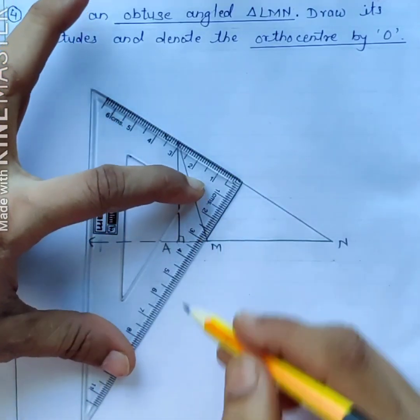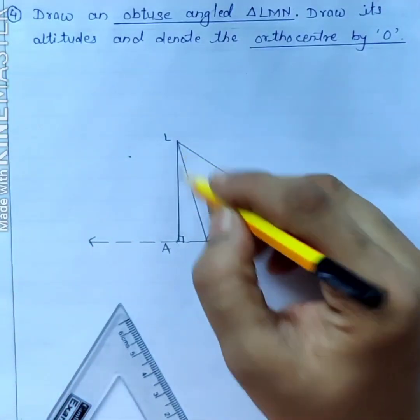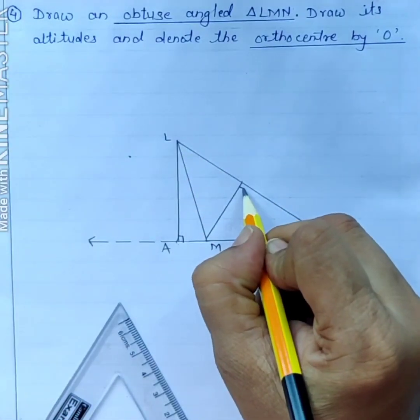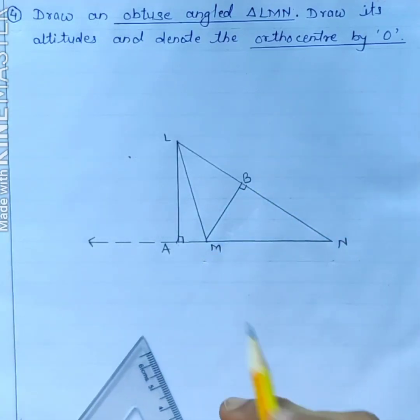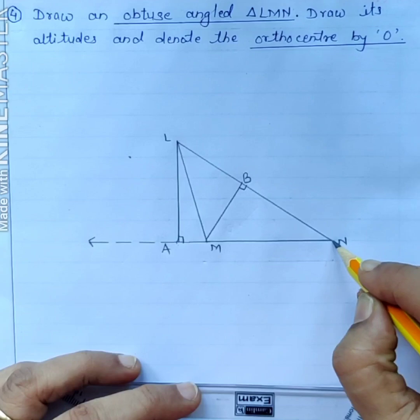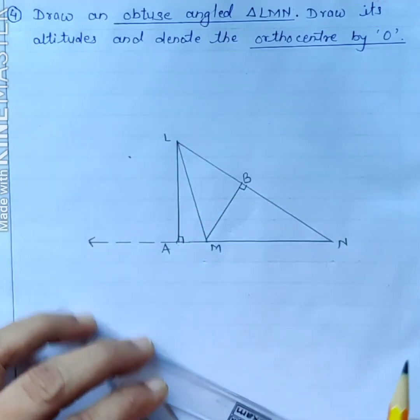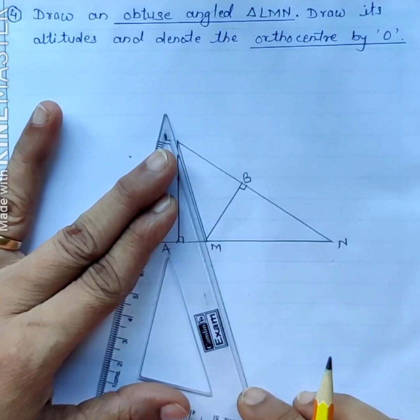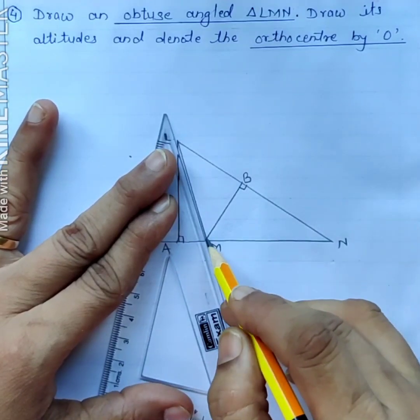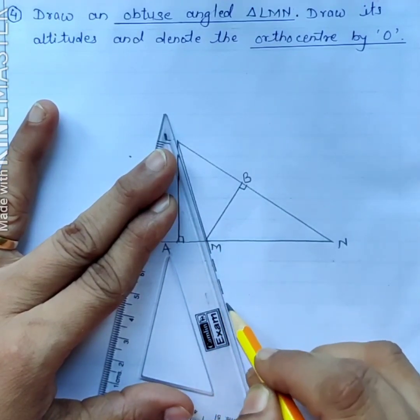First altitude, this is perpendicular to the opposite side MN. And the third one, third altitude from vertex N to side LM. Again we have to extend this side LM towards this side like this.